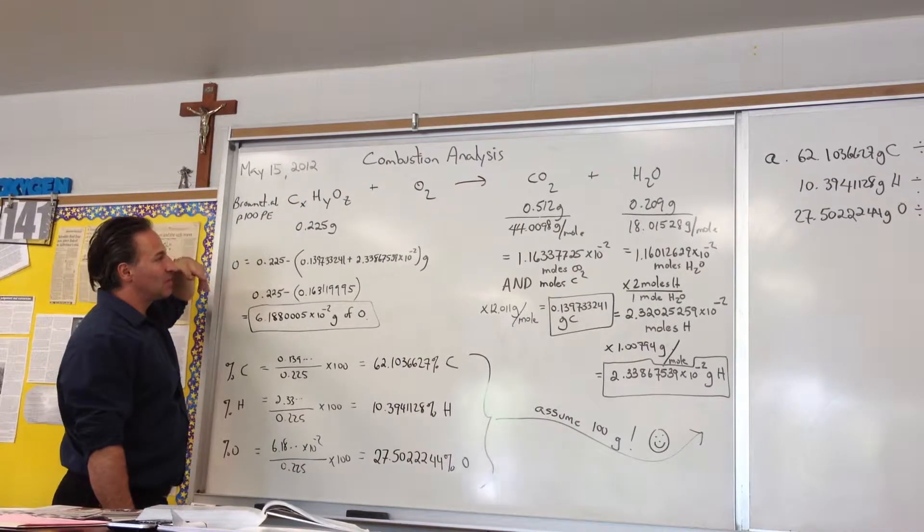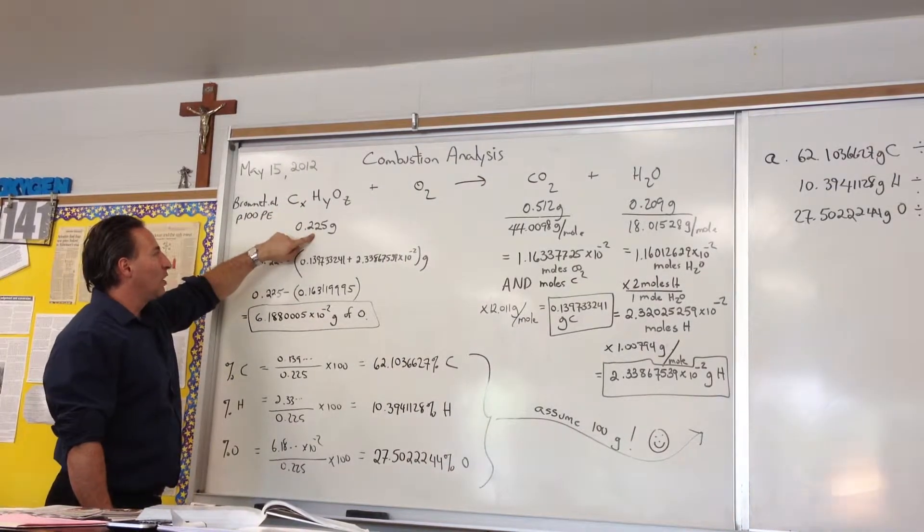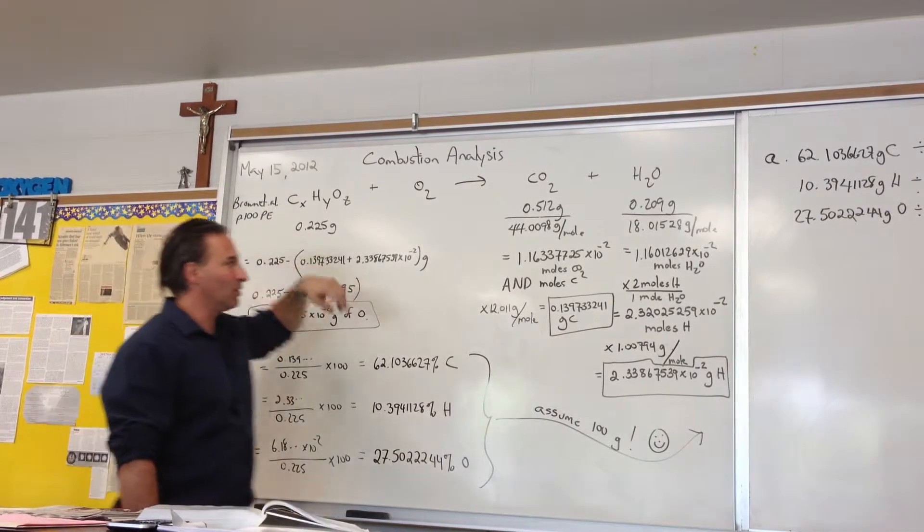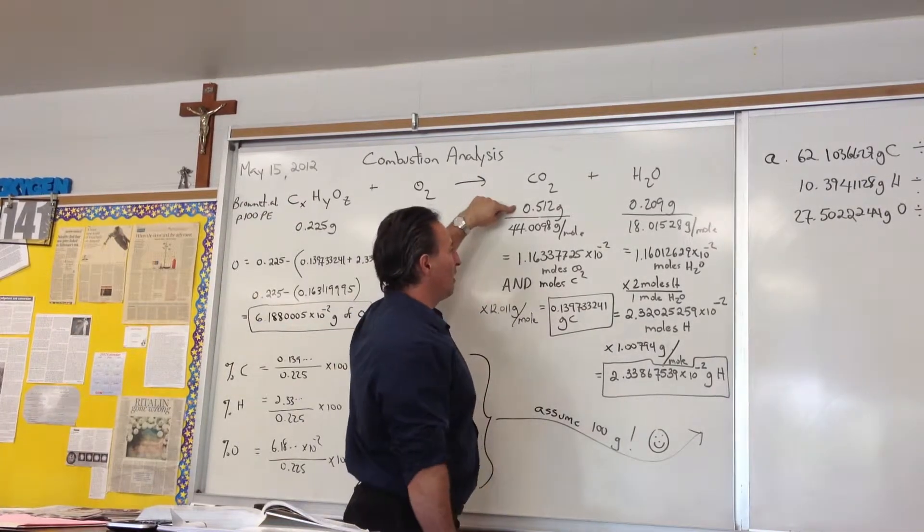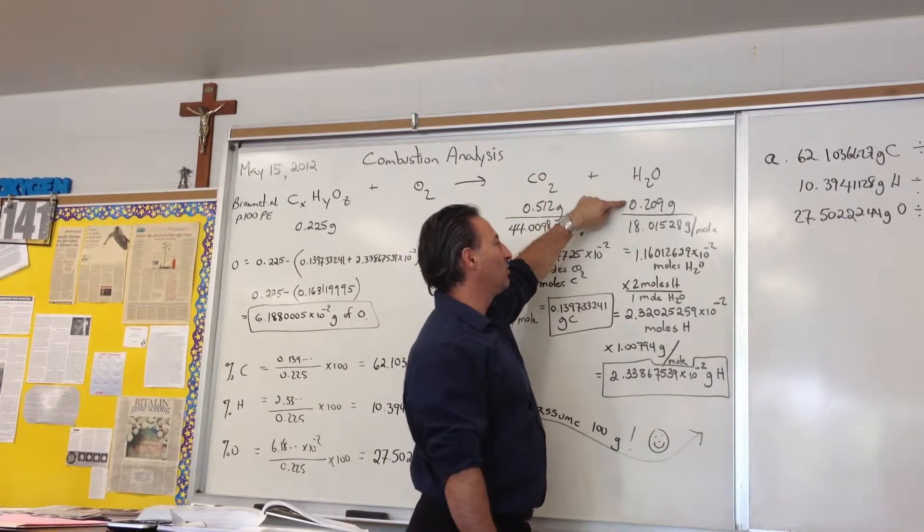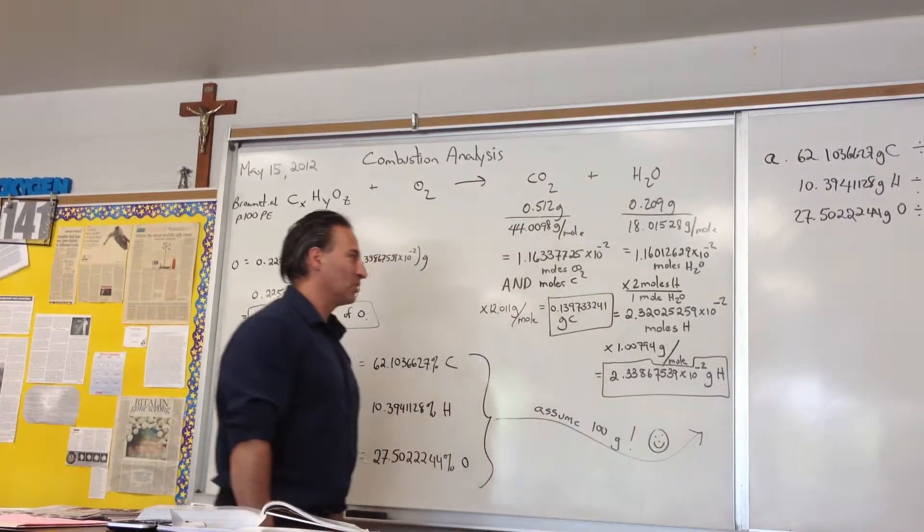The three pieces of information we have are: one, 0.225 grams of the unknown compound was burned; two, 0.512 grams of CO2 was produced; and three, 0.209 grams of water was produced.